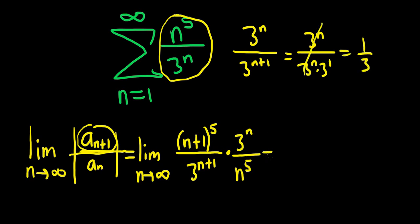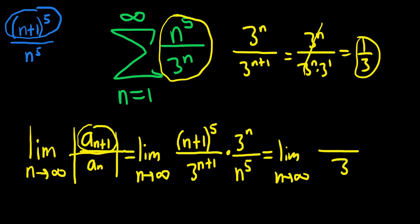So this is equal to the limit as n goes to infinity. On the bottom, we're definitely going to get a 3, because it's 1 over 3. And let's deal with the n's now. I'll do it over here on the top left. We have n plus 1 to the 5 over n to the 5. This limit is going to be 1 because when you multiply the top piece out, you can think of the highest degree term as being n to the 5th.